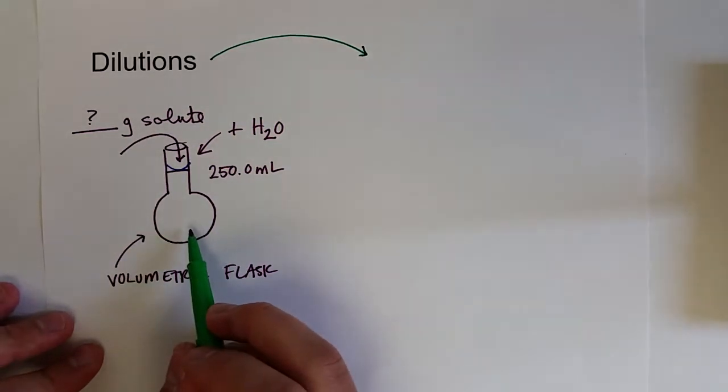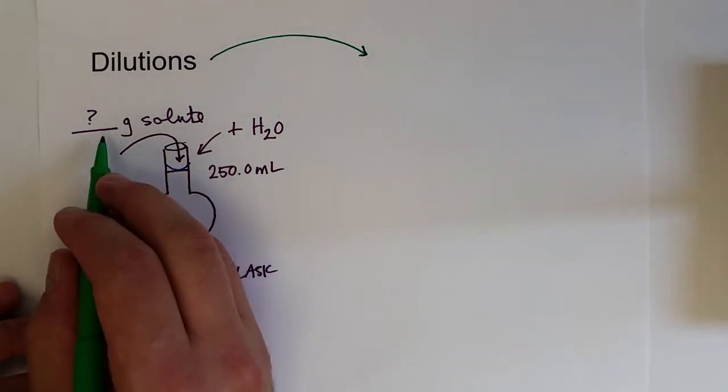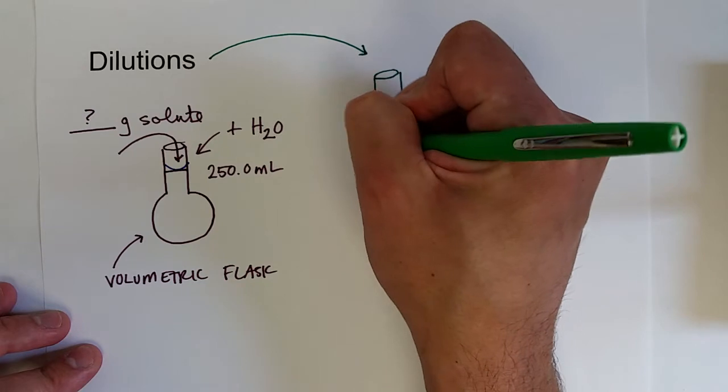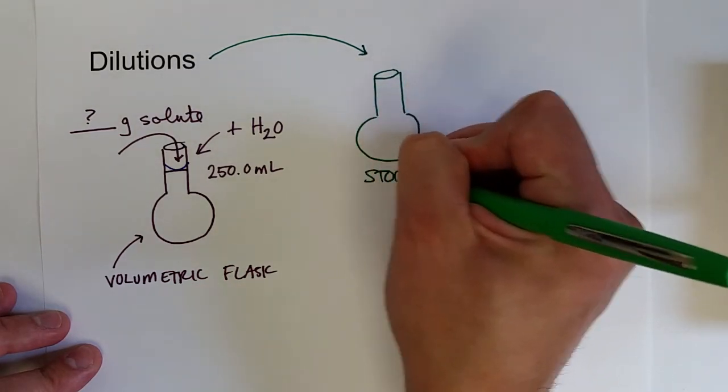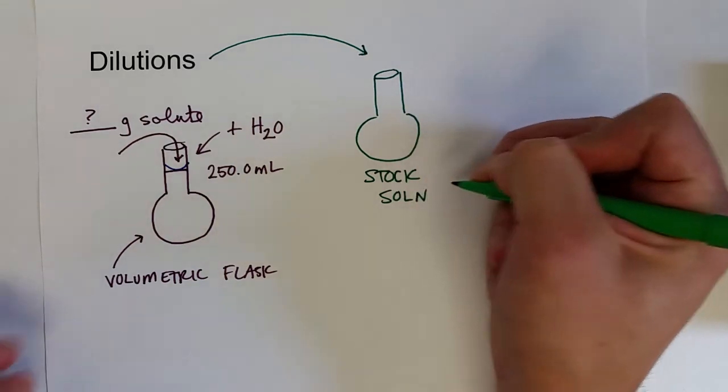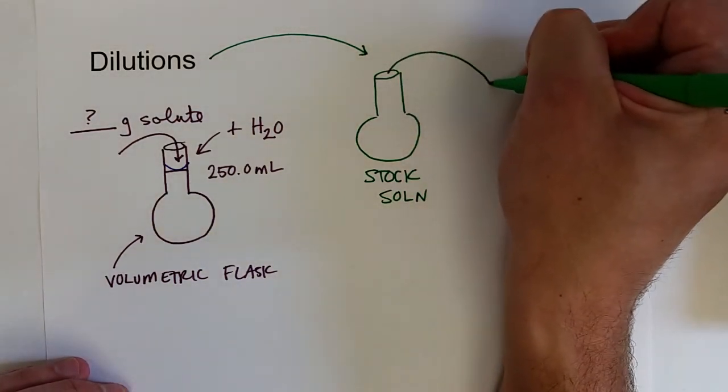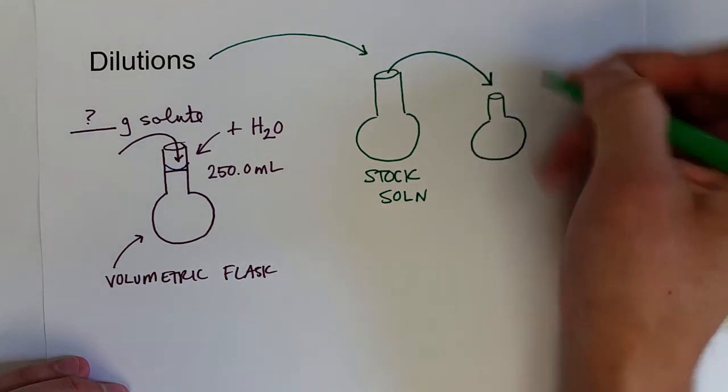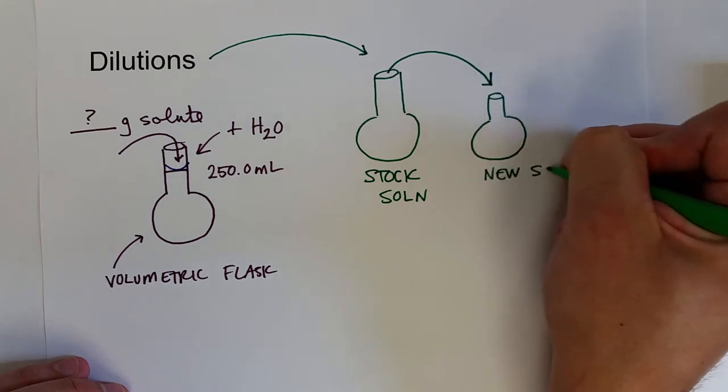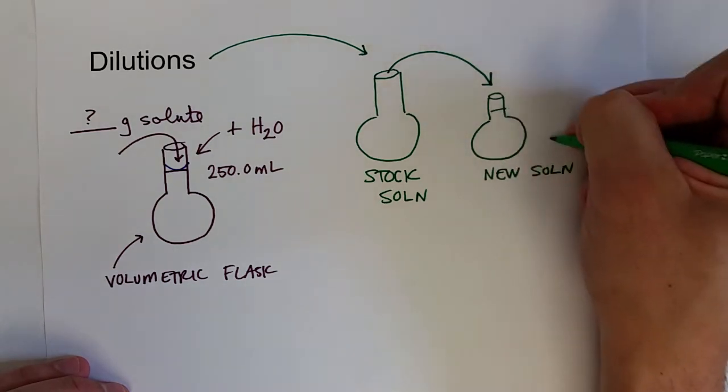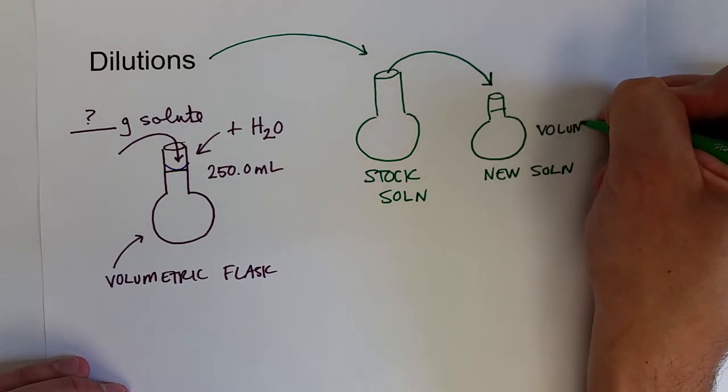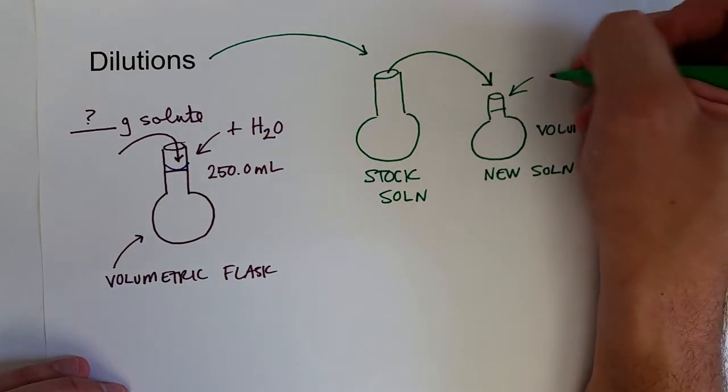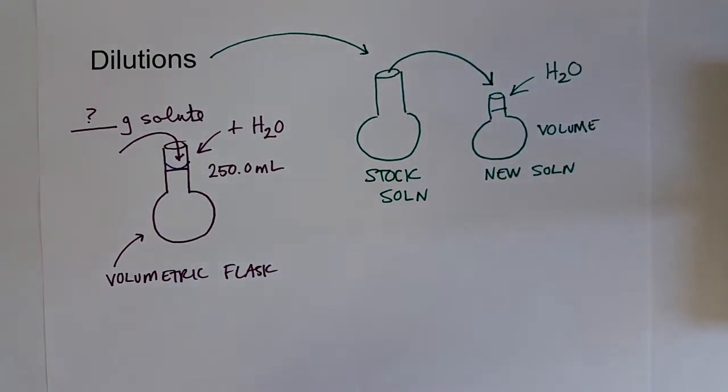So what happens is you make a solution via this method by measuring out the mass of solute to make the appropriate concentration and then you're going to take some of that volume, what is known as your stock solution, and you take a small amount of that out and add it to a new container. You're making a new solution that has a new volume and then you would add water to dilute it to whatever volume you needed.